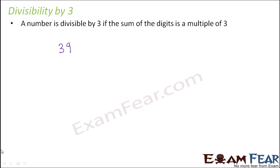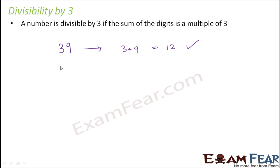Let's take an example. Say you have the number 39 and you have to find out if it is divisible by 3. Instead of actual division, just add the digits: 9 plus 3 is 12, and 12 is divisible by 3, so 39 is also divisible by 3. For 393, the sum is 3 plus 9 plus 3 which is 15, and 15 is divisible by 3, so 393 is also divisible by 3.